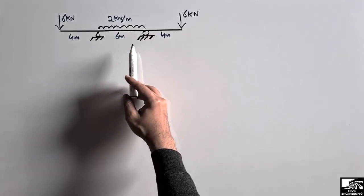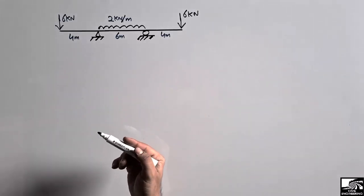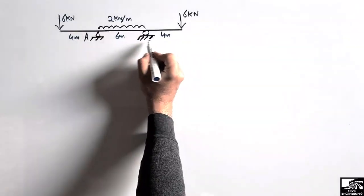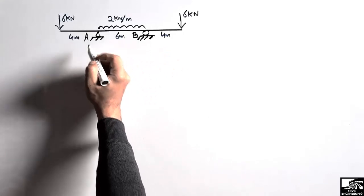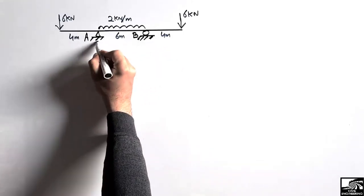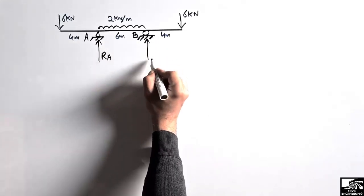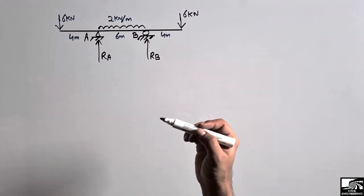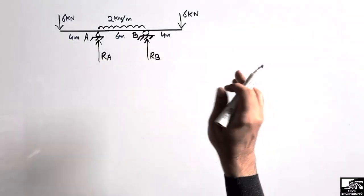First we have to find out the support reactions for this beam, and then we can draw the shear force and bending moment diagram. Let's call this support A and this support B, so we will have reaction RA acting upward and RB acting upward. Since there is no horizontal force, there is no need to consider the horizontal reaction of the hinge support.